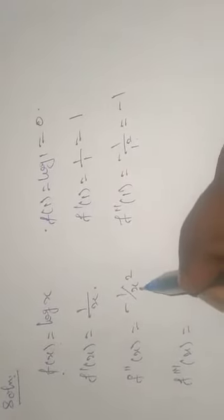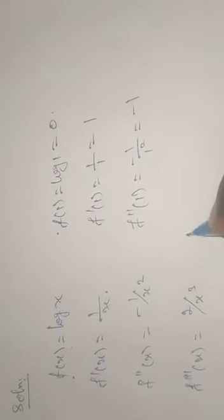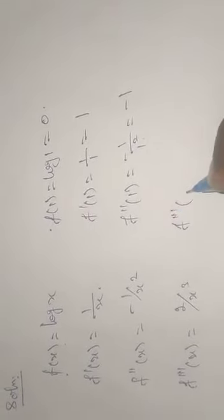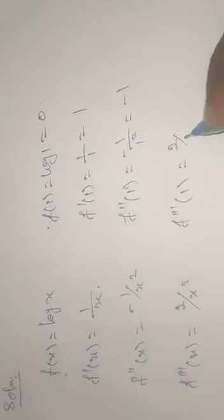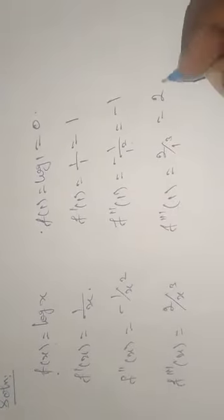Then f triple dash of x: differentiating minus 1 by x squared gives 2 by x cubed. Therefore f triple dash of 1 equals 2 by 1 cubed, giving the value 2.